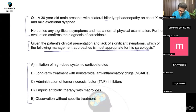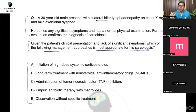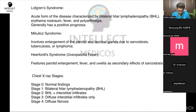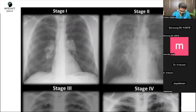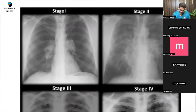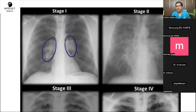Now, if we talk about sarcoidosis — you all know these patients have BHL, that is bilateral hilar lymphadenopathy, which is very important. They present with cough and when you do a chest X-ray initially, you will see hilar lymphadenopathy. This is how it looks — this is the hilar area showing lymphadenopathy, and this is bilateral hilar lymphadenopathy, referred to as stage one.